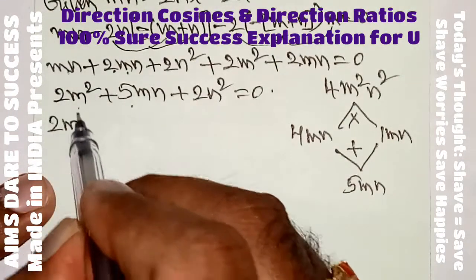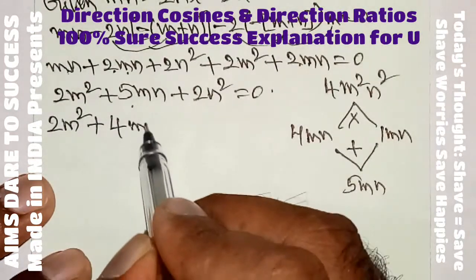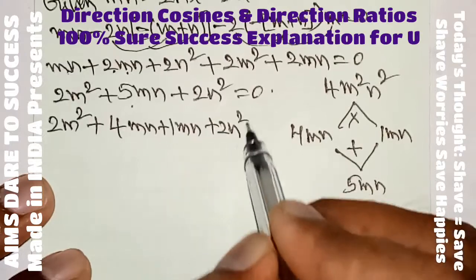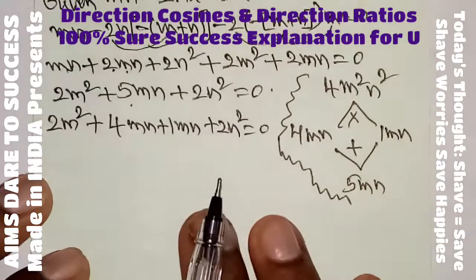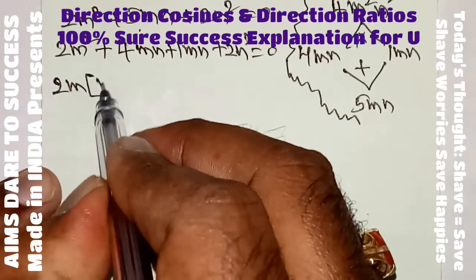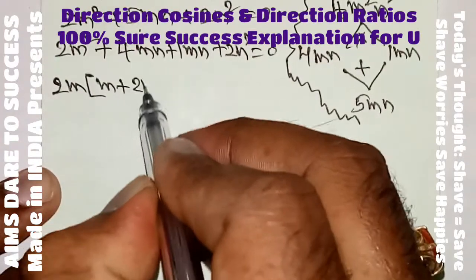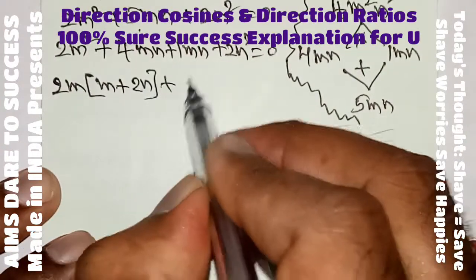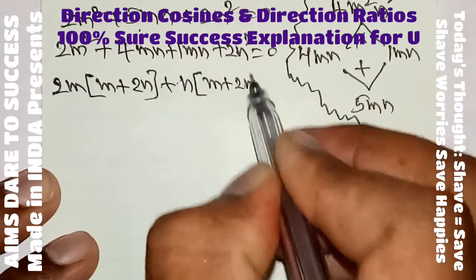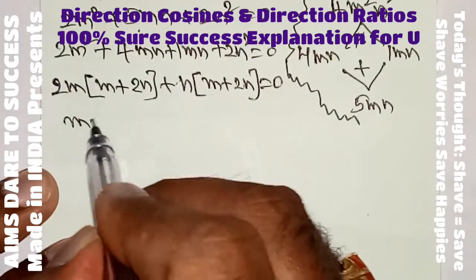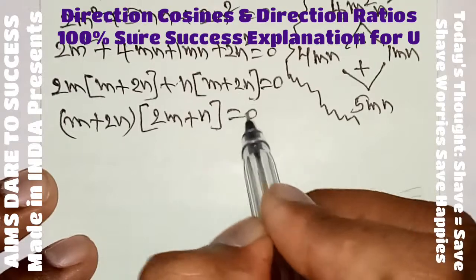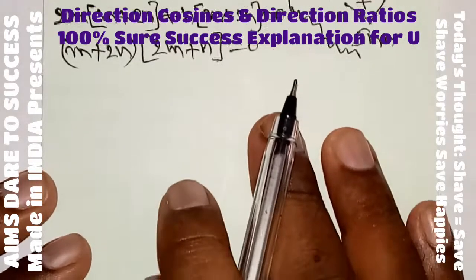Substituting: 2m squared plus 4mn plus 1mn plus 2n squared equals 0. Taking 2m common from the first two terms gives 2m(m plus 2n), and n common from the last two terms gives n(m plus 2n). So (m plus 2n)(2m plus n) equals 0.